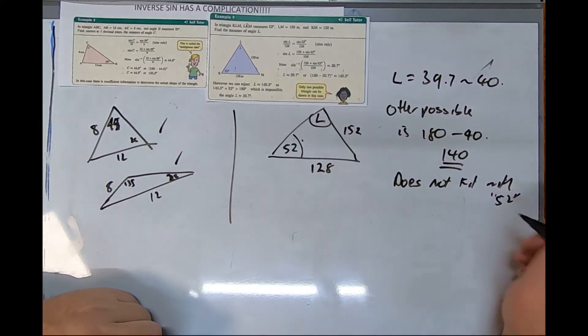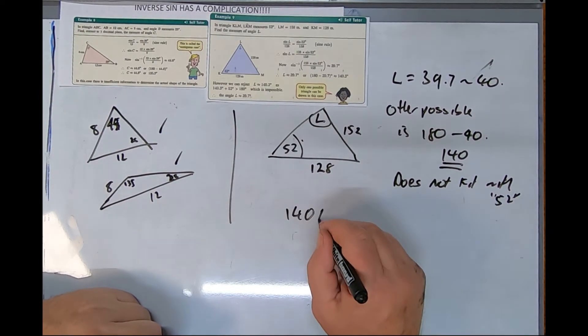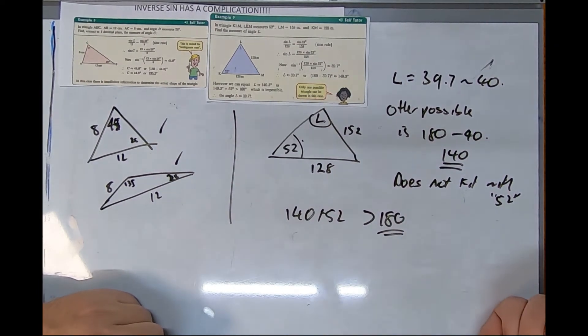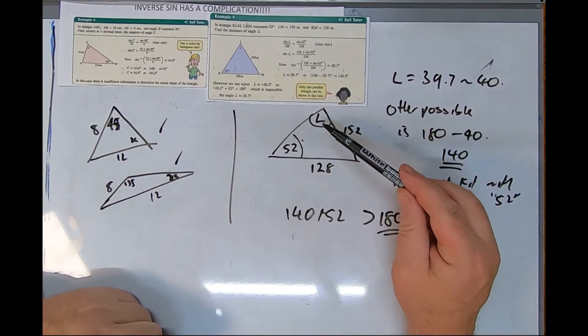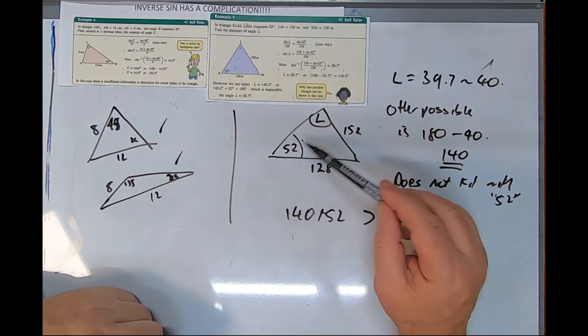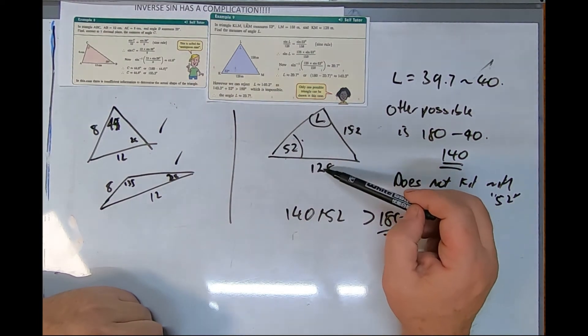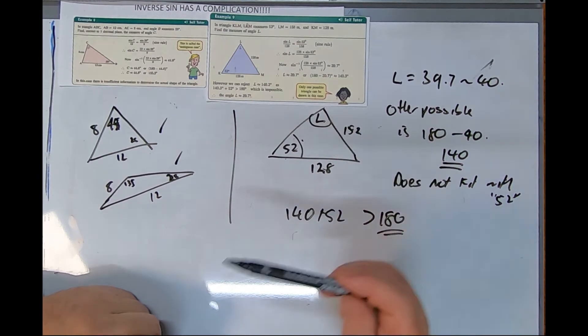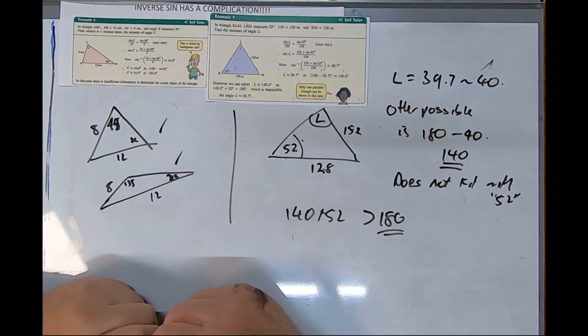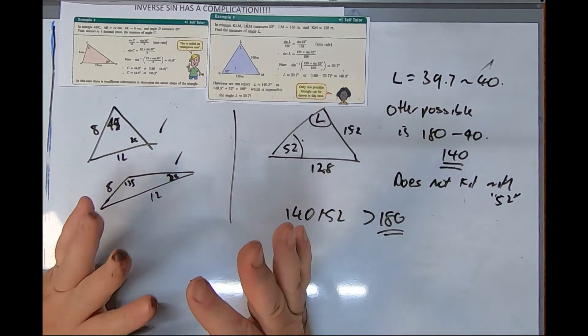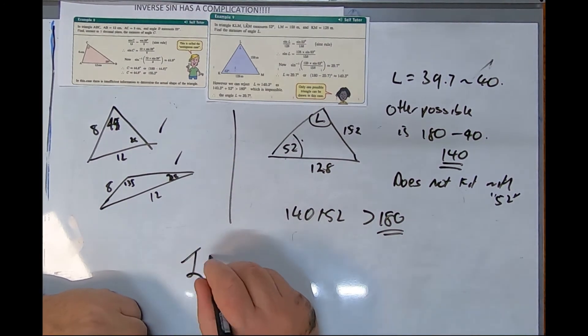The other possibility is 180 take 40, or 140. 140 does not fit with the 52. 140 plus 52 is too big, bigger than 180, doesn't fit in a triangle. But there's the other reasoning: if this is 52 and that's 152, this side is shorter, so that angle has to be smaller. That all holds true.